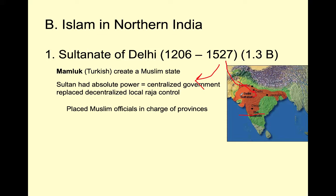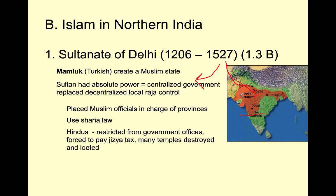They put Muslims they can trust — because they share the same religion — in control of these provinces in their attempt to centralize. Next, they import the idea of Sharia law. Sharia law — using the Quran as a basis of the legal system — travels with conquest into northern India. Hindus are allowed to continue their faith, just like in the rest of the Muslim world where dhimmi — Jews and Christians — are allowed to practice as long as they pay the jizya tax. The same thing happens in India, because there are just too many Hindus to suppress and convert; it would cause a full rebellion and destabilize the Sultanate.